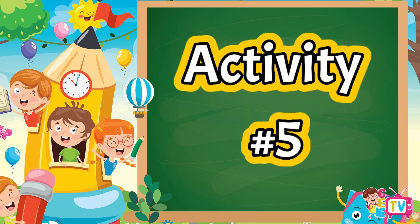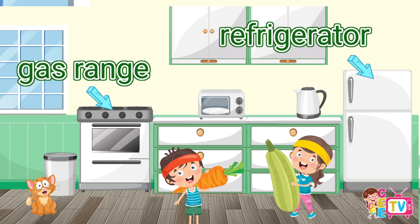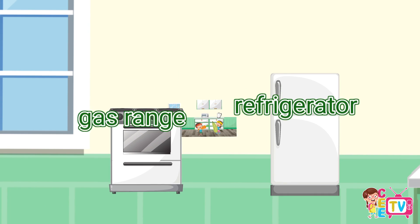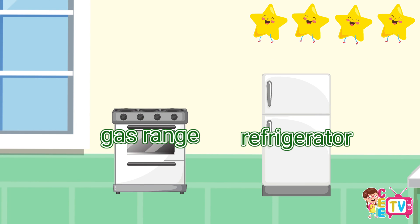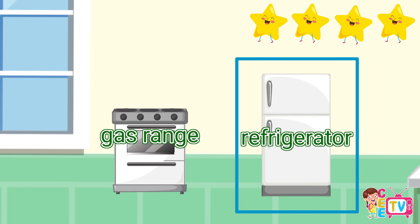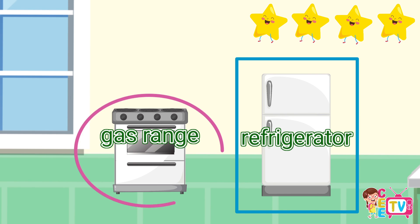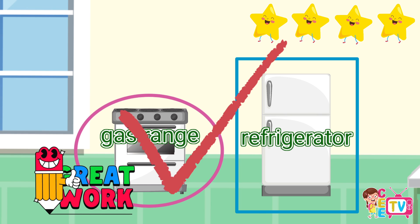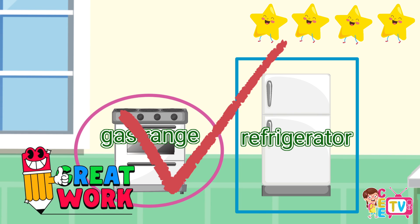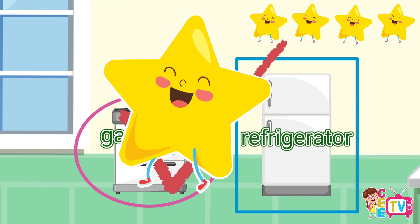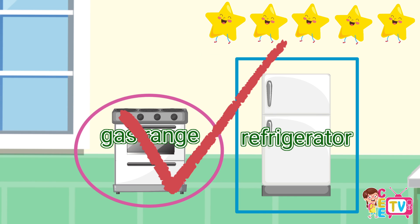Activity number five: Box the tall object and circle the short object. I will box the refrigerator because it is tall, and I will circle the gas range because it is short. Fantastic! You got it right! Here is your fifth star! Yay!